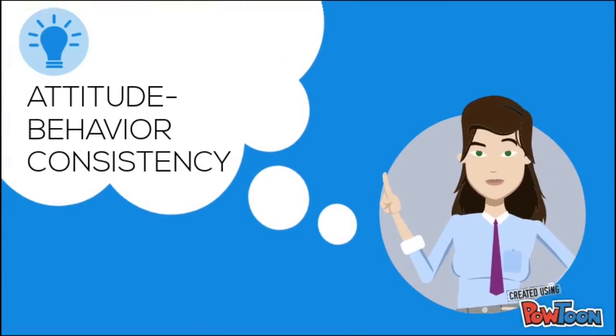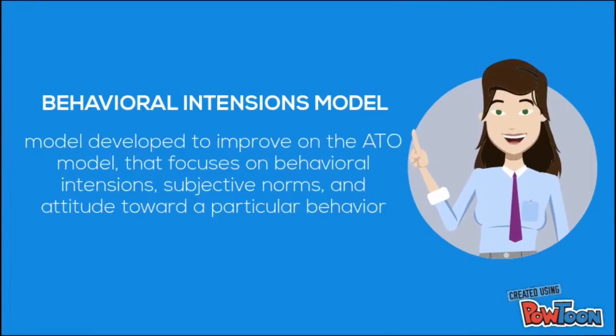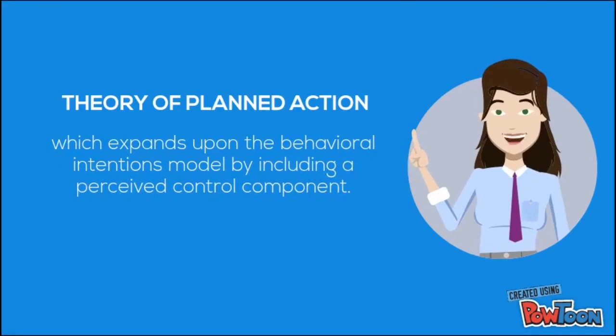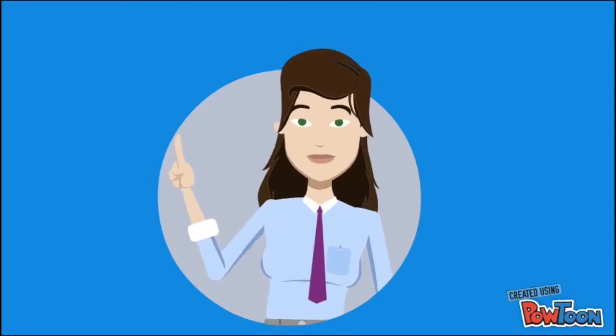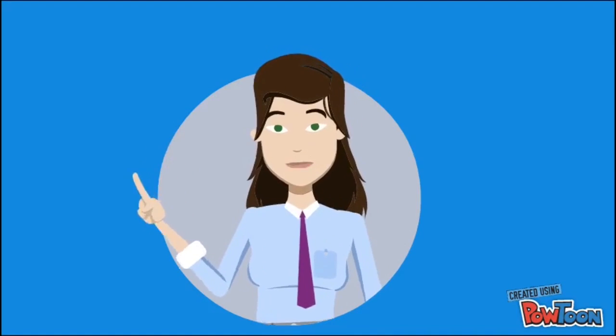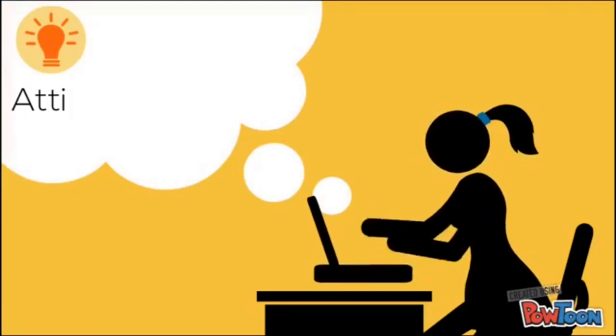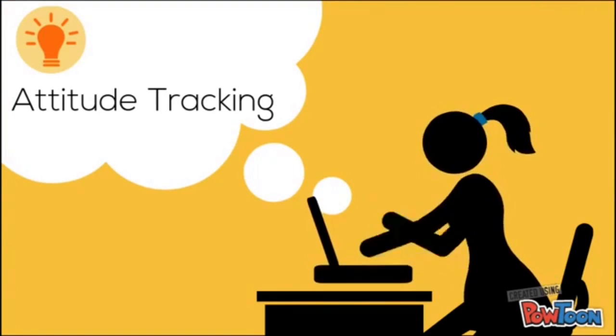Attitude-behavior consistency refers to the extent to which a strong relationship exists between attitudes and actual behavior. The Behavioral Intentions Model was developed to improve on the ATO model and focuses on behavioral intentions, subjective norms, and attitude toward a particular behavior. The Theory of Planned Action expands upon the behavioral intentions model by including a perceived control component. This component assesses the difficulty involved in performing the behavior and the extent to which the consumer perceives that he or she is in control of the product selection. Attitude tracking refers to the extent to which a company actively monitors its customers' attitudes over time.